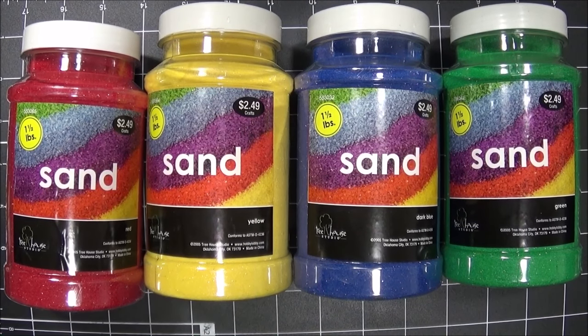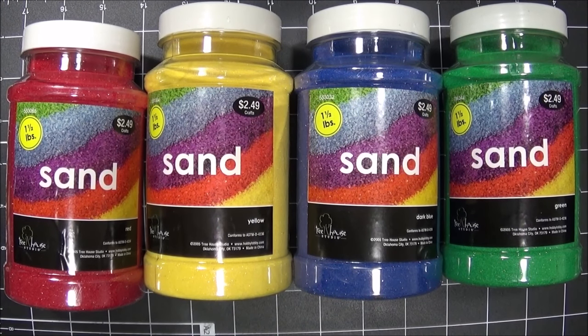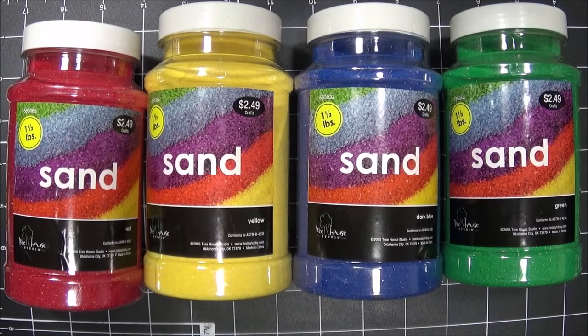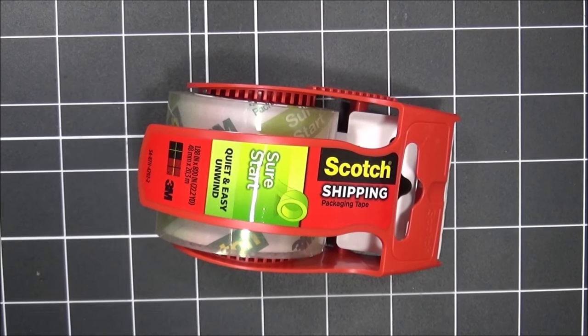I'll be using red, yellow, blue, and green sand to fill up my corked bottles, but you can also use small beads if you want to. You'll also need some packing tape.